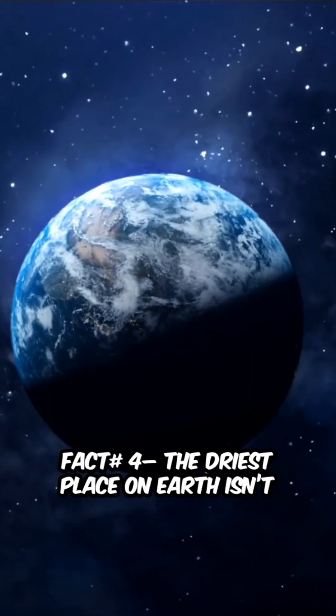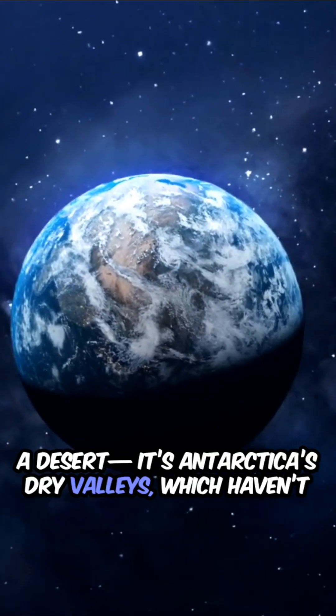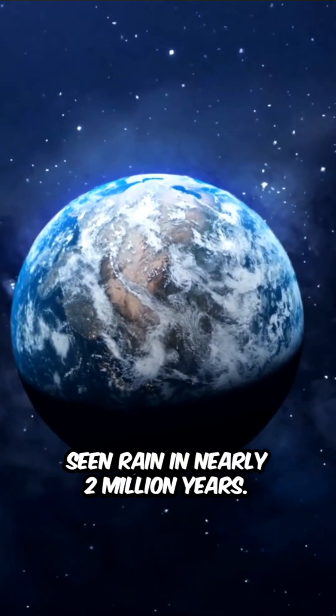Fact number four. The driest place on Earth isn't a desert. It's Antarctica's dry valleys, which haven't seen rain in nearly two million years.